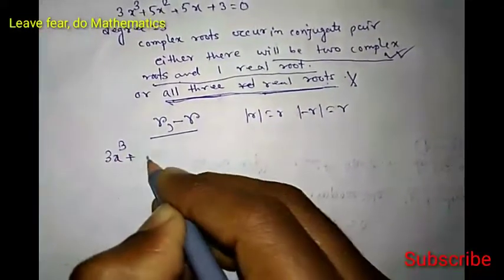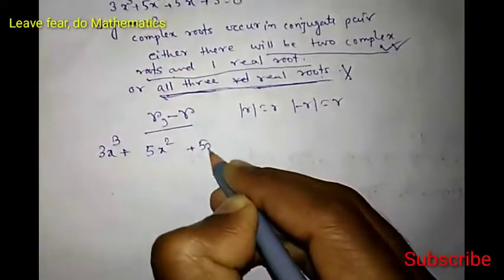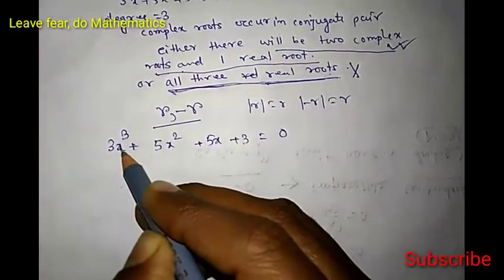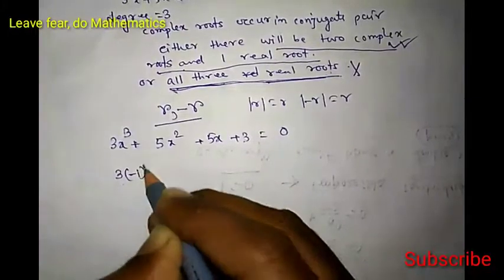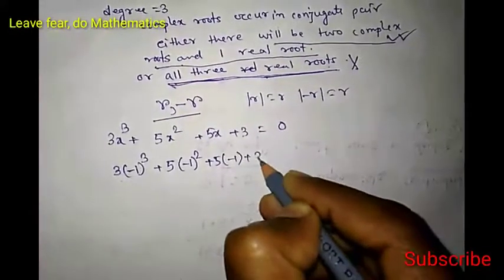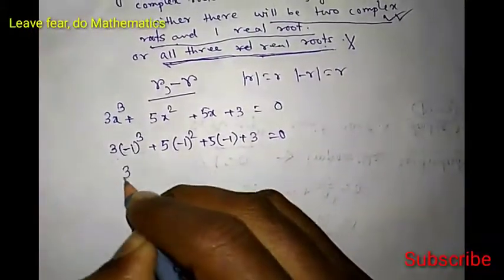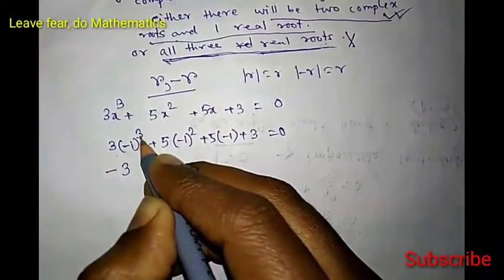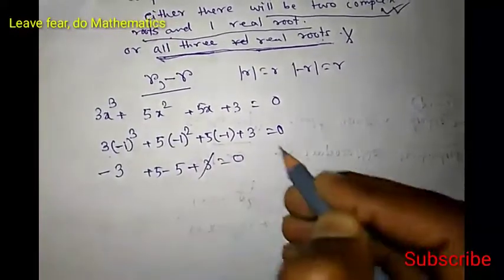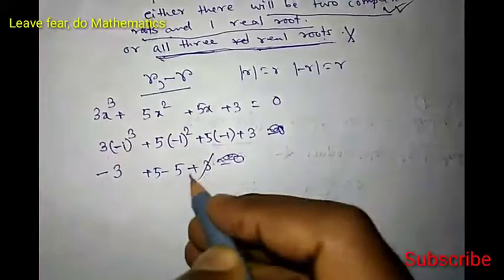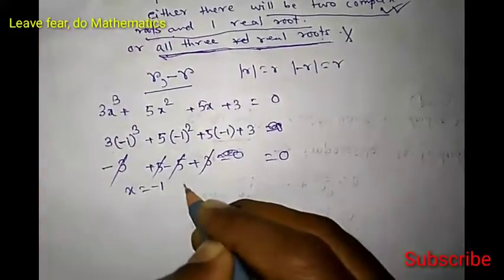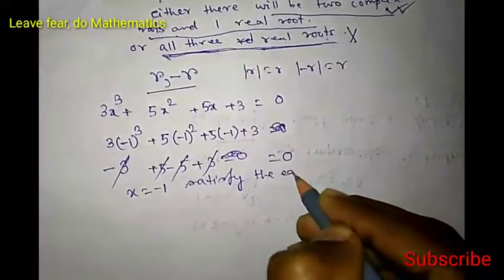The equation is 3x³ + 5x² + 5x + 3 = 0. In place of x, just put −1. Then we will have 3(−1)³ + 5(−1)² + 5(−1) + 3. Since (−1)³ = −1, this gives −3 + 5 − 5 + 3 = 0. So x = −1 satisfies the equation.